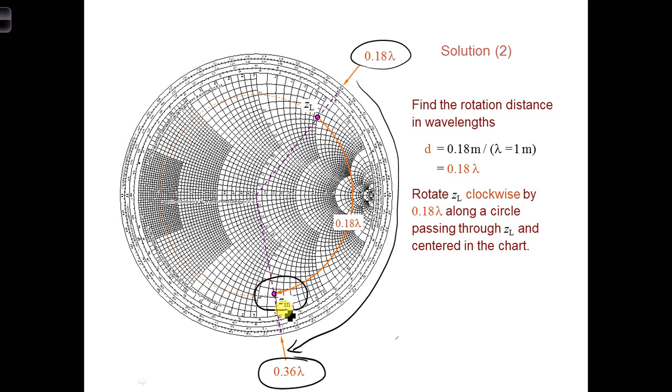So I'm labeling this Z in, that's the input impedance at that distance. And also remember we're going towards the generator because we were at the load, so we're going in the clockwise direction to go towards the generator.